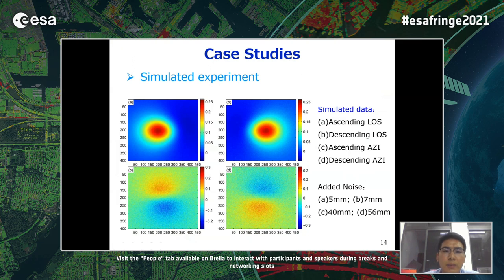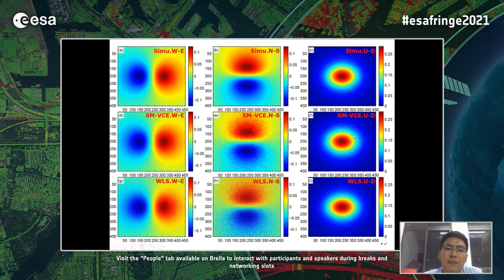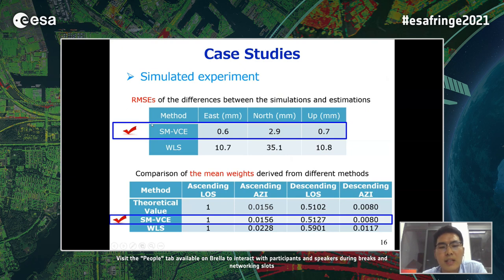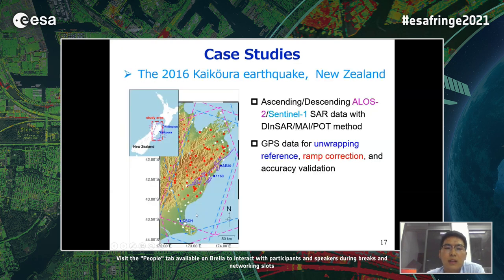We use simulated experiments to evaluate the proposed method with four simulated observations. For comparison, we use the pixel-by-pixel weighted least squares method as a benchmark. The spatial patterns between different methods are very similar. Quantitative evaluation shows that our method determines more accurate 3D deformations as well as more accurate weighting factors.